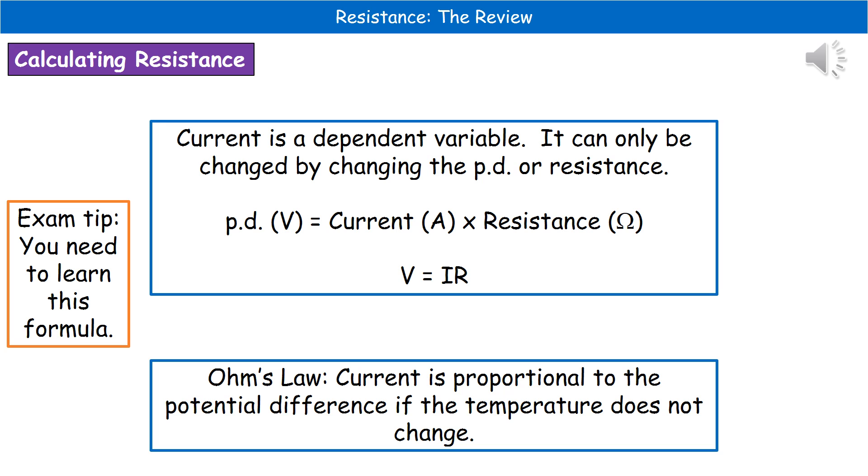The reason for that is our little formula that we do have to memorize for the exam. The potential difference in volts is our current in amps times the resistance in ohms. That can be shortened down to this very brief version of V equals IR. If you like learning just letters or coming up with little rhymes to help you remember it, that might be of use to you.